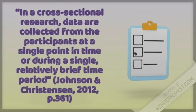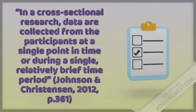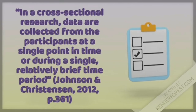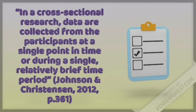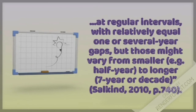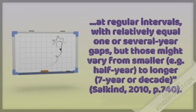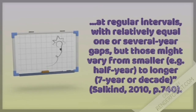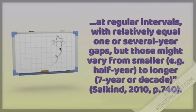In a cross-sectional research, data are collected from the participants at a single point in time or during a single relatively brief time period, according to Johnson and Kristen Sen. They are conducted at regular intervals with relatively equal one or several year gaps, but those might vary from smaller to longer years, according to Salkin.